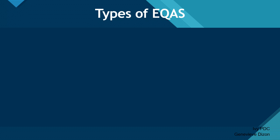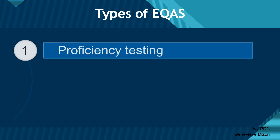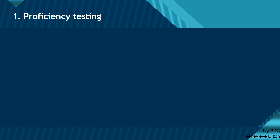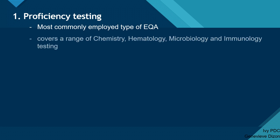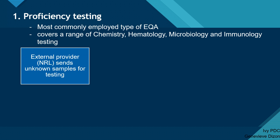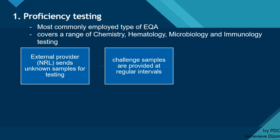EQA is divided into three different types according to the WHO: proficiency testing, rechecking or retesting, and on-site evaluation. Proficiency testing is the most commonly employed type of EQA because it can address many laboratory methods like chemistry, hematology, microbiology, and immunology testing. The process starts with the National Reference Laboratories, which send unknown samples for laboratory testing at regular intervals.